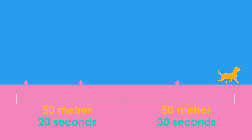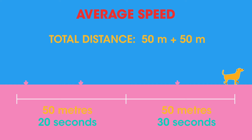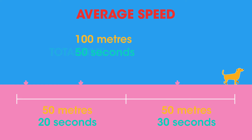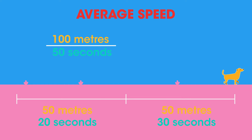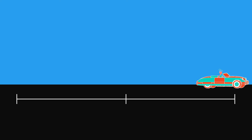To calculate the average speed, we must first find the total distance the dog has traveled, then we find the total time the dog has traveled for. Then we can calculate the average speed by dividing the total distance by the total time. Now it's your turn — here's another example, this time a car traveling down the road.